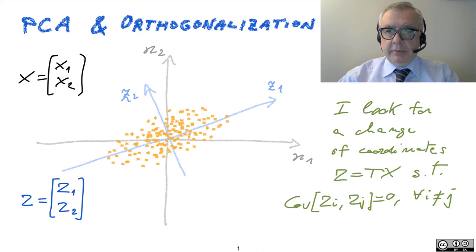We now say a few words about the algebra of principal component analysis. As a matter of fact, principal component analysis has to do with a change of coordinates and with the orthogonalization of random variables.